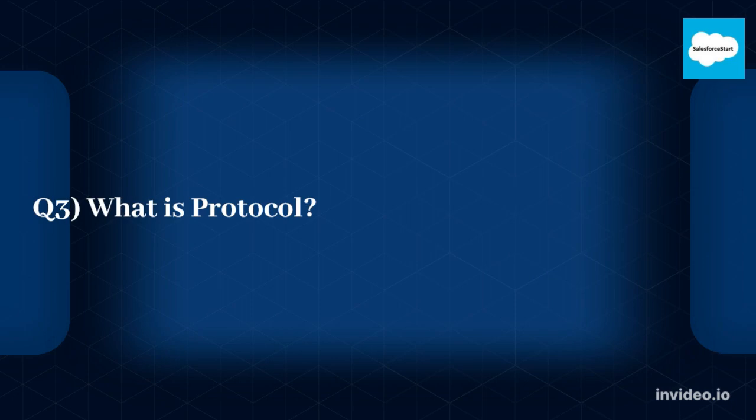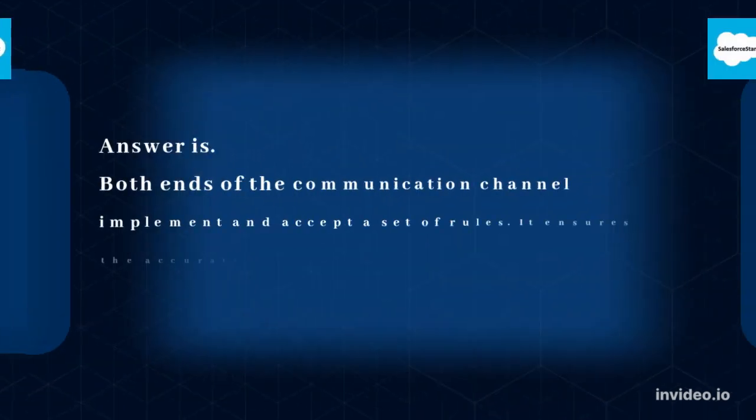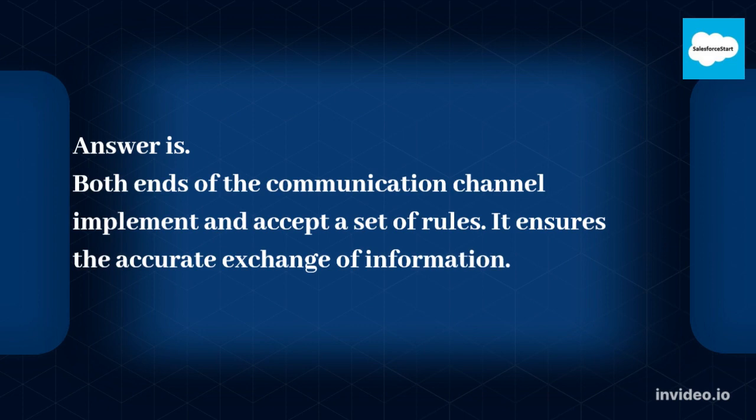Q3: What is a protocol? Both ends of the communication channel implement and accept a set of rules. It ensures the accurate exchange of information.